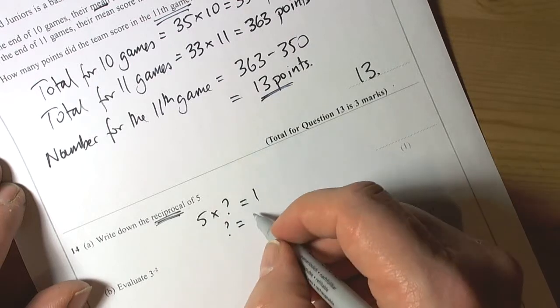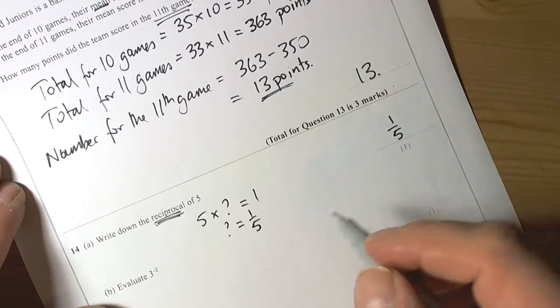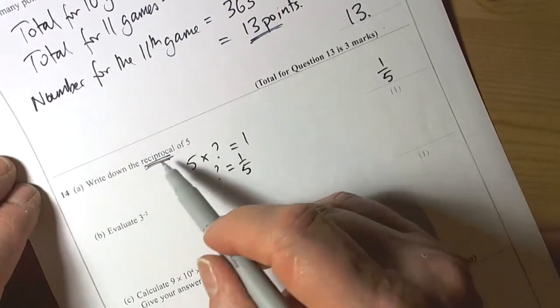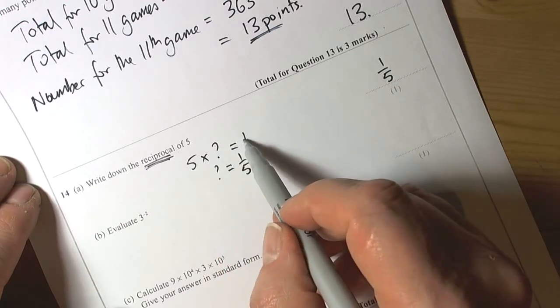The question mark is going to be doing the opposite of the times, so we're going to end up dividing. The answer here will be one-fifth. Again, the reciprocal is multiplied by the number at the starting point and will always give you an answer of one.